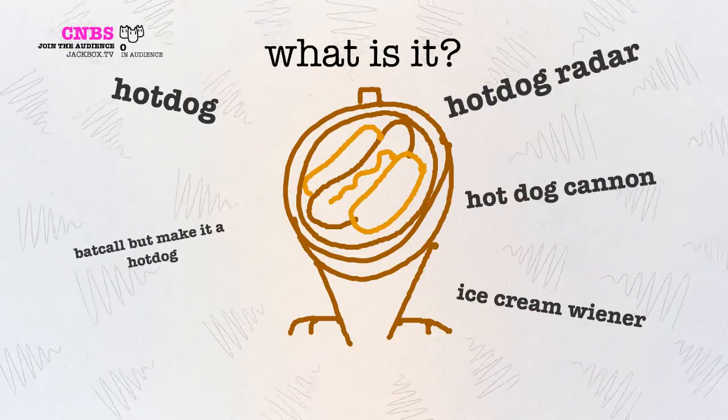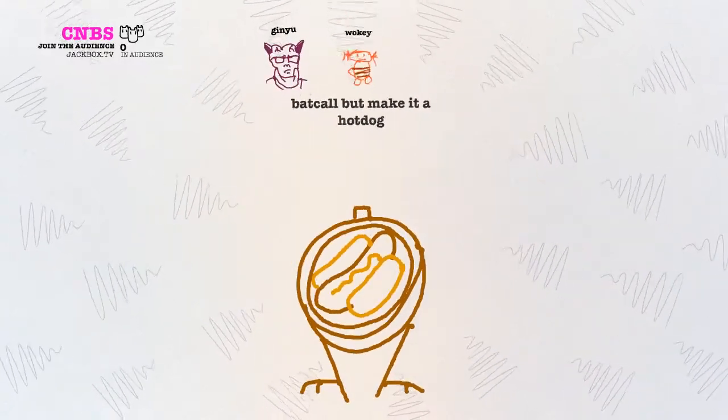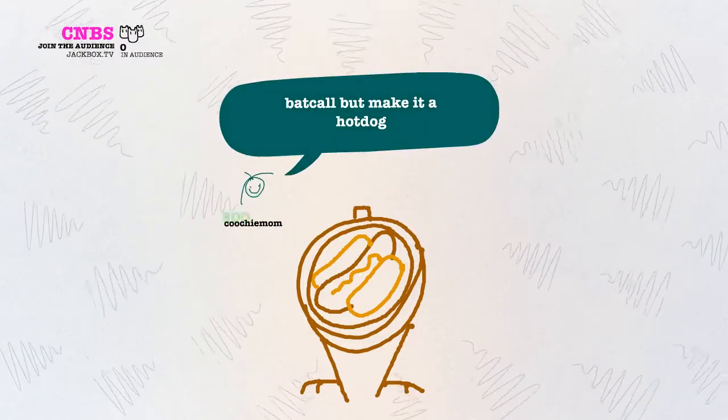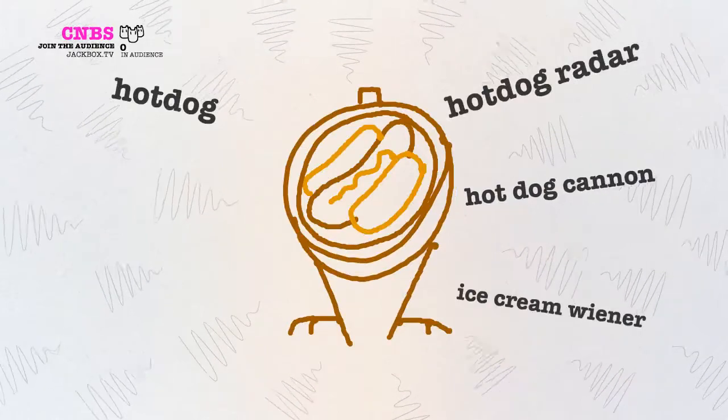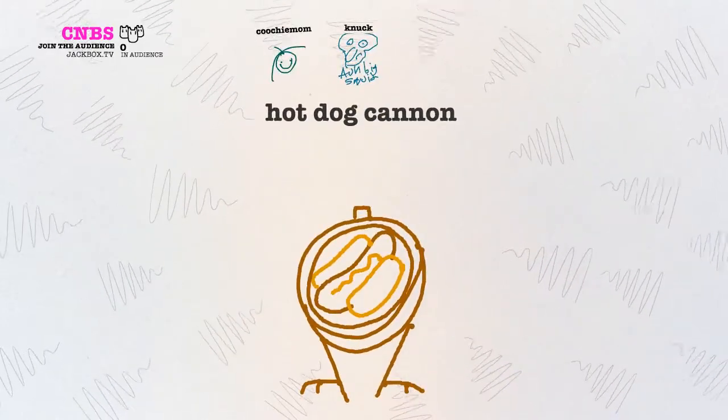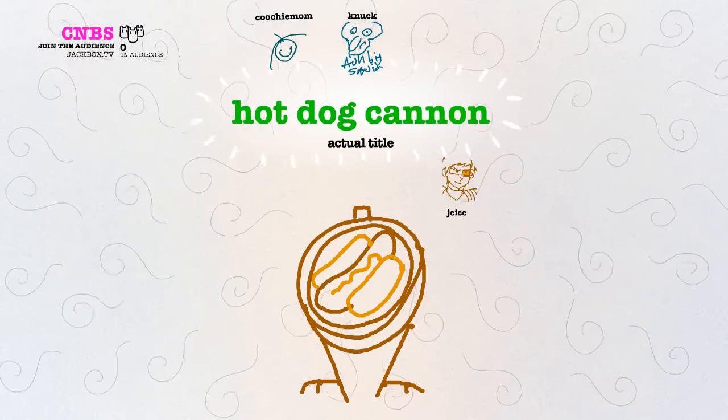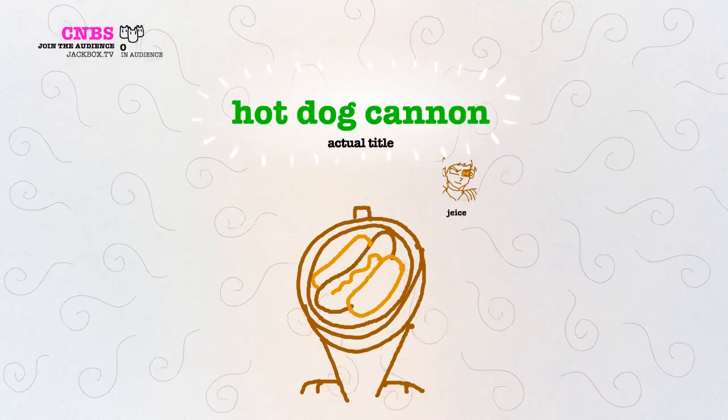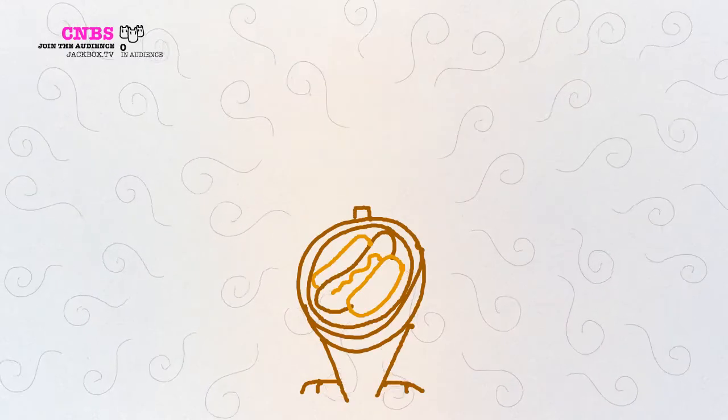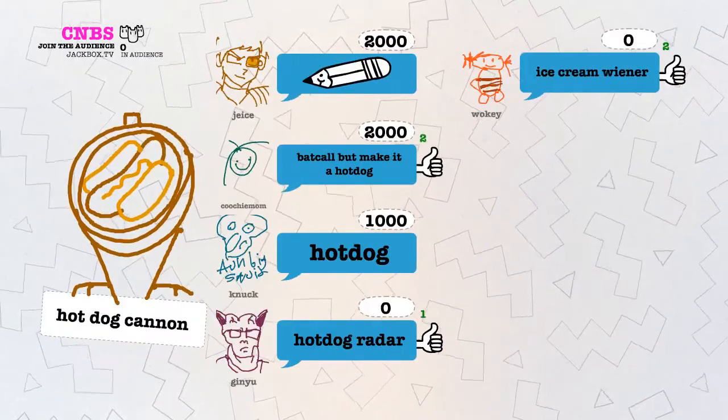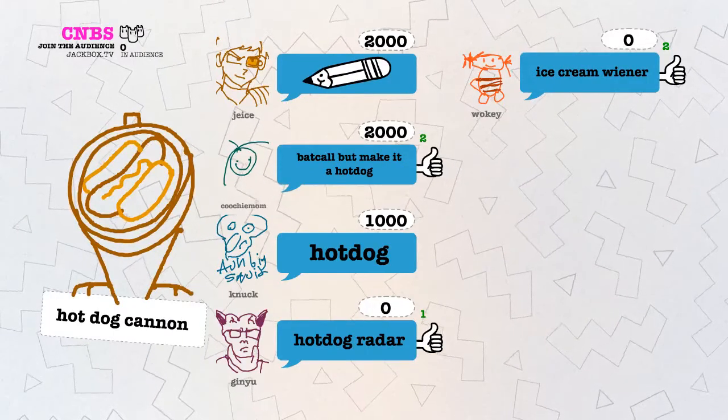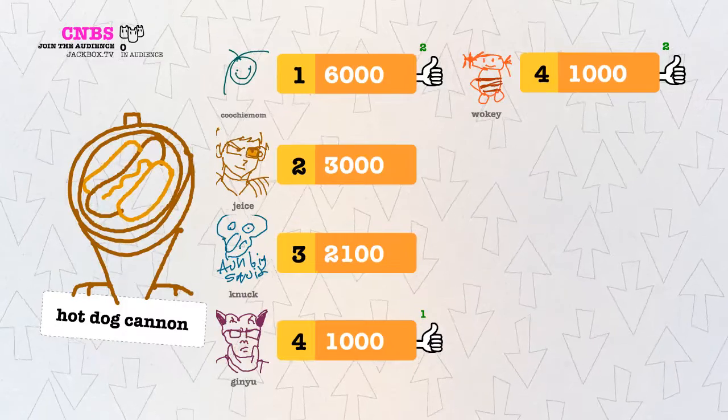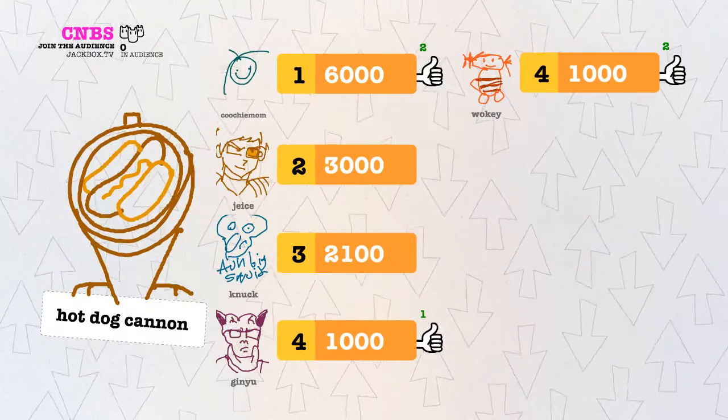And here are your picks. Ah, careful, boy. You completely destroyed the scene. Bat call, but make it a hot dog. Damn it. So it wasn't the bat signal? No, that's how the Americans did it in the Revolutionary War. I thought it was like a hot dog version of Batman. Wiener Man or something. Hot dog cannon. Okay, I see it now.